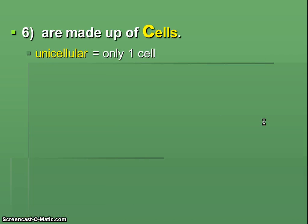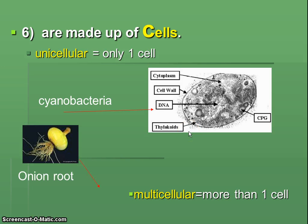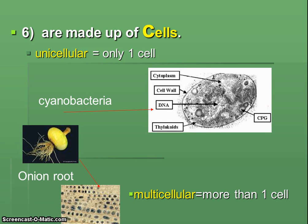All living things are made up of cells. We've been talking mostly about humans and plants, but some things only have one cell and we call them unicellular — think unicycle, one. For instance, bacteria are single-celled. Other things are multicellular, like humans, plants, or your friend the onion. Whether they're single-celled or multicellular — plant, animal, bacteria, or fungus — all living things are made of cells. If they're not made of cells, they're not alive.